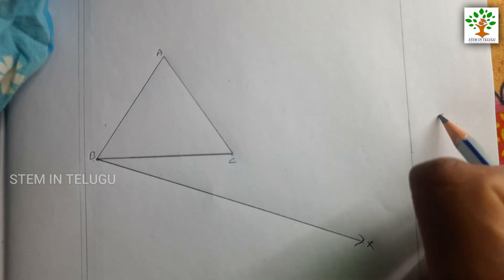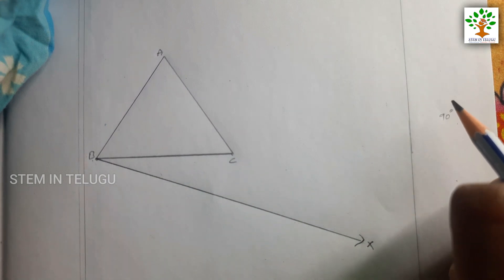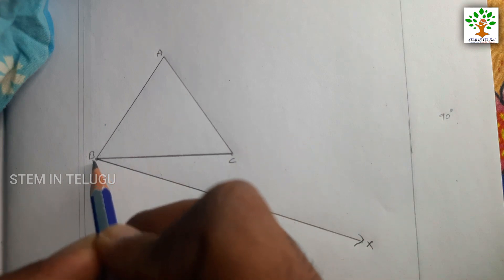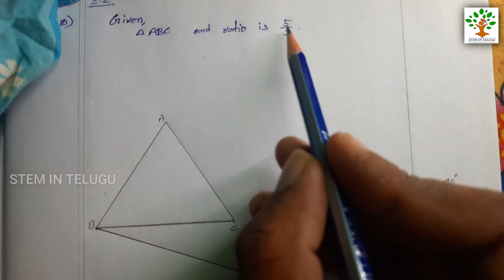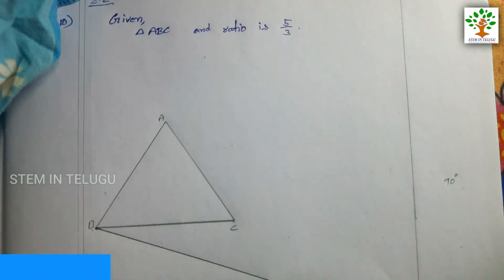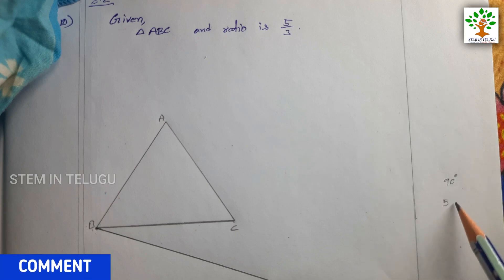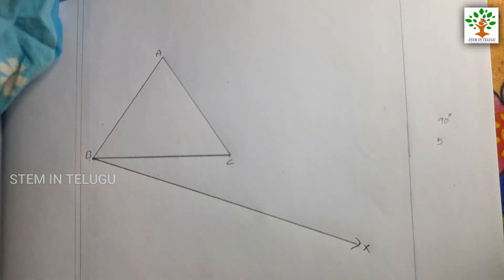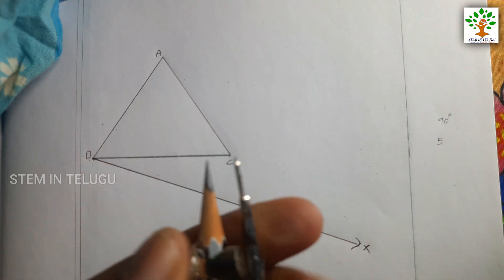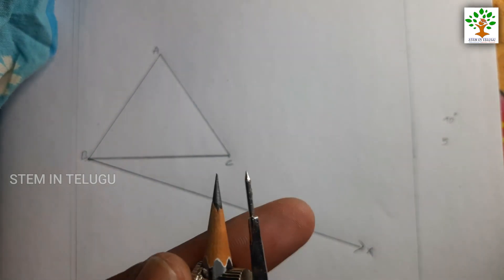Next, the acute angle is less than 90 degrees. So, 90 degrees is angle B. This is the acute angle. Now, we can mark some points. For the ratio 5/3, we can draw the triangle.